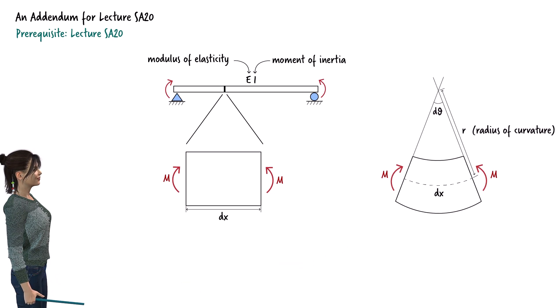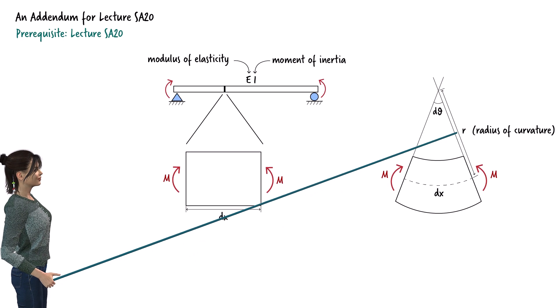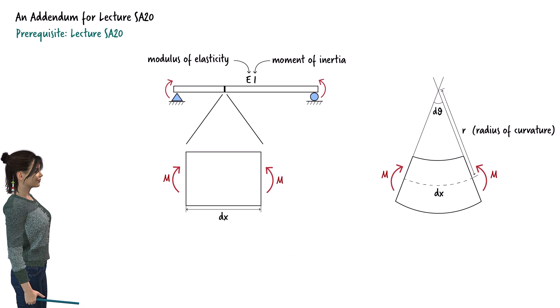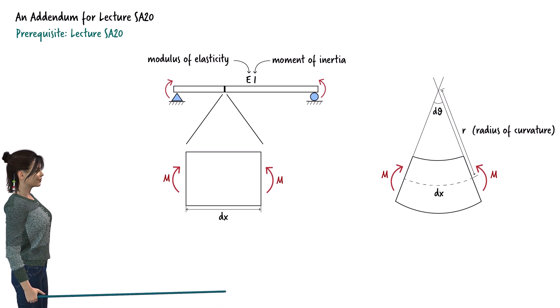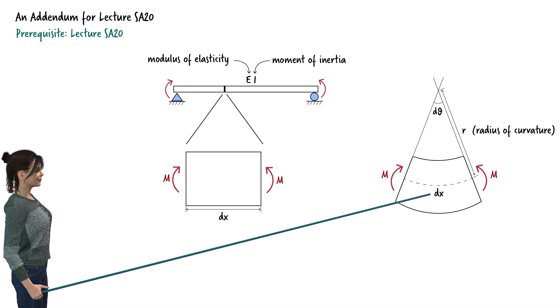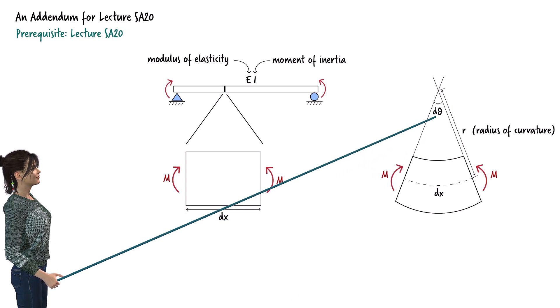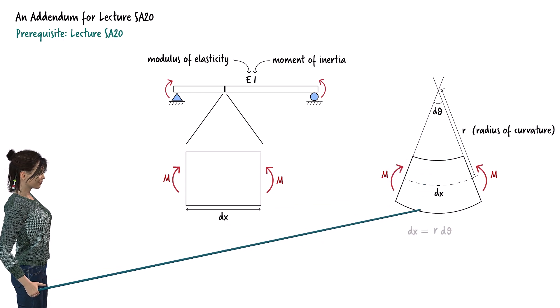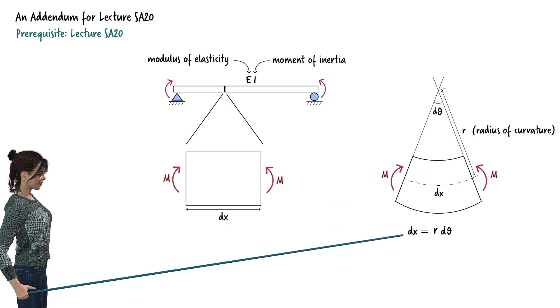If we call the angle facing the arc length dθ, then this length forms the radius of a hypothetical circle. We can label it r and call it radius of curvature. dx can be defined in terms of dθ and r. The arc length of a circle equals the angle facing the arc length times the circle's radius. So we can write dx equals r times dθ.